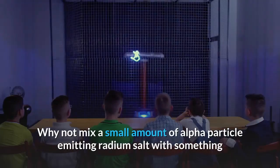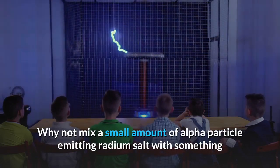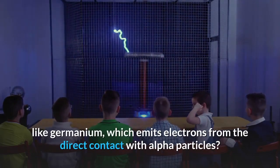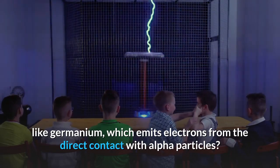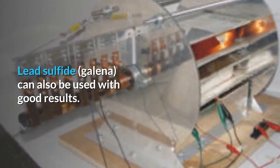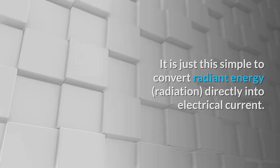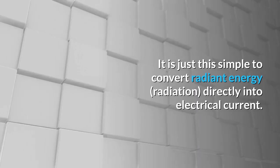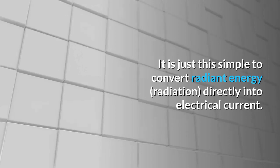Why not mix a small amount of alpha particle emitting radium salt with something like germanium, which emits electrons from the direct contact with alpha particles. Lead sulfide galena can also be used with good results. It is just this simple to convert radiant energy radiation directly into electrical current.